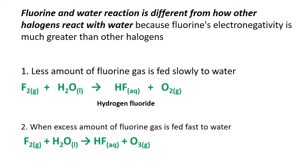Also, ozone can be given as a product and it is also a toxic gas. Fluorine and water reaction is different from how other halogens react with water because fluorine's electronegativity is much greater than other halogens.